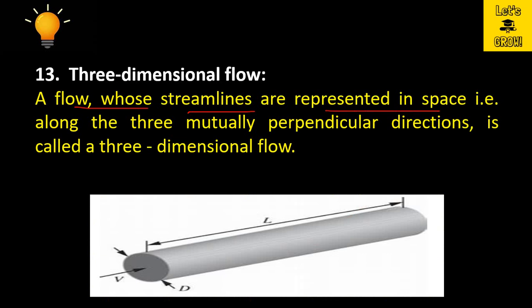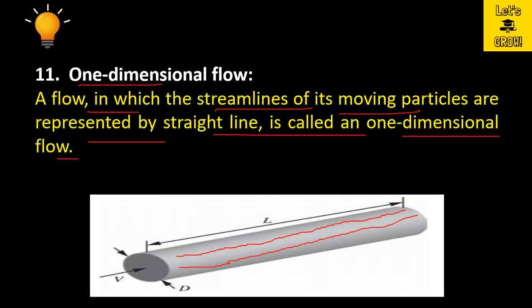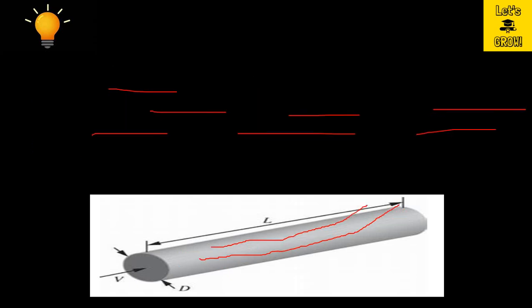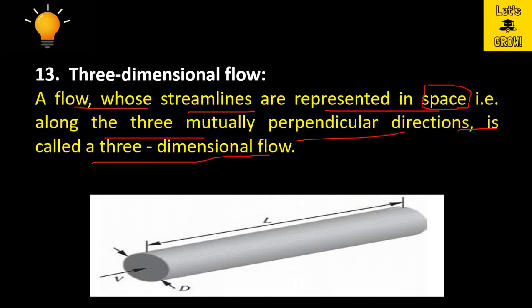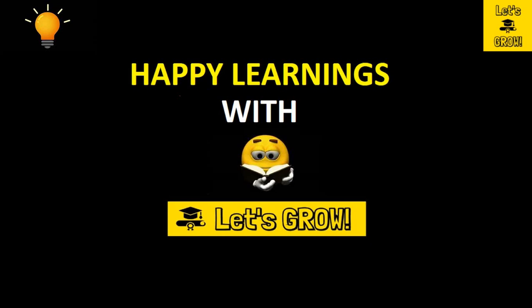A flow whose streamlines are represented in space — along three mutually perpendicular directions x, y, and z — is called three-dimensional flow. In one-dimensional flow, streamlines are straight and one velocity component is required. In two-dimensional flow, streamlines are curves and two velocity components are required. In three-dimensional flow, three mutually perpendicular directions and three velocity components — Vx, Vy, and Vz — are required to represent the flow.